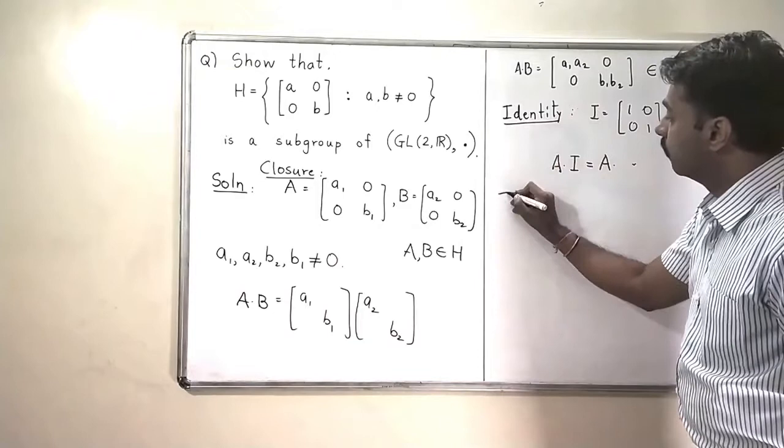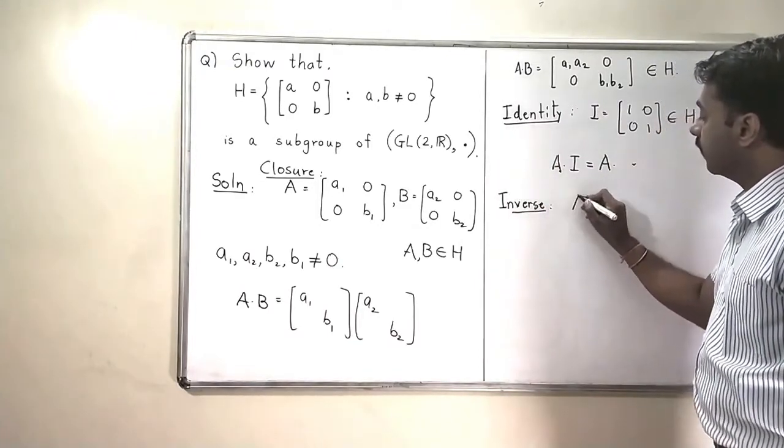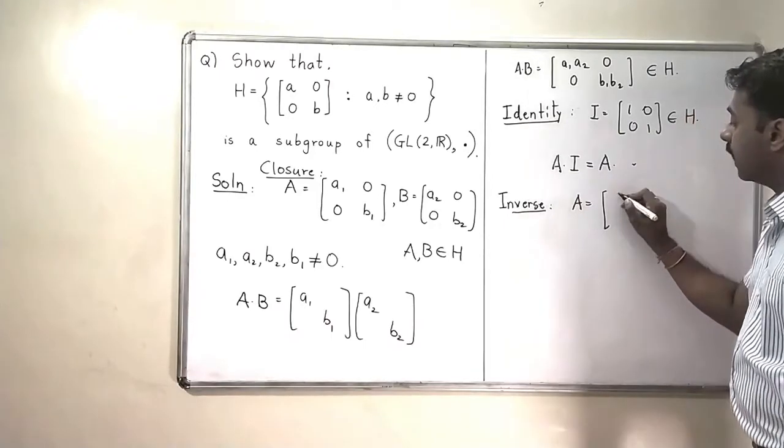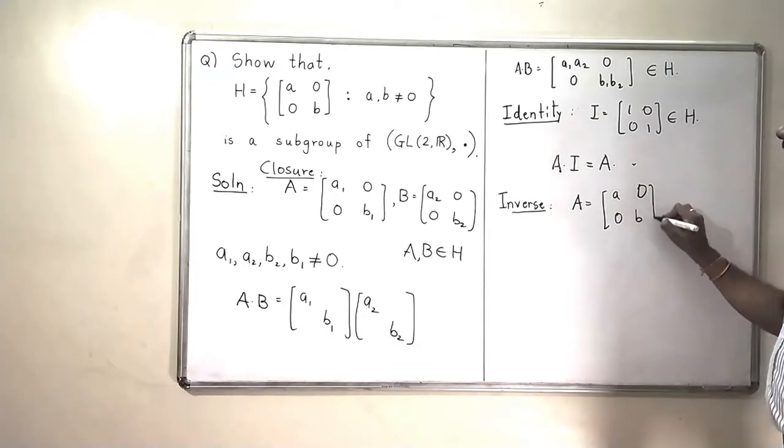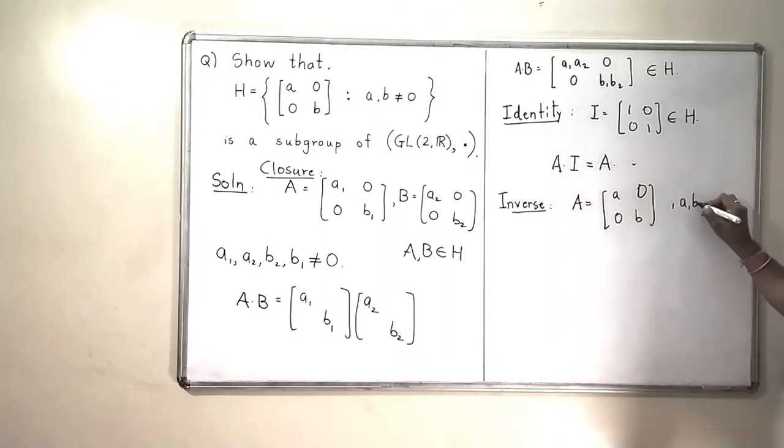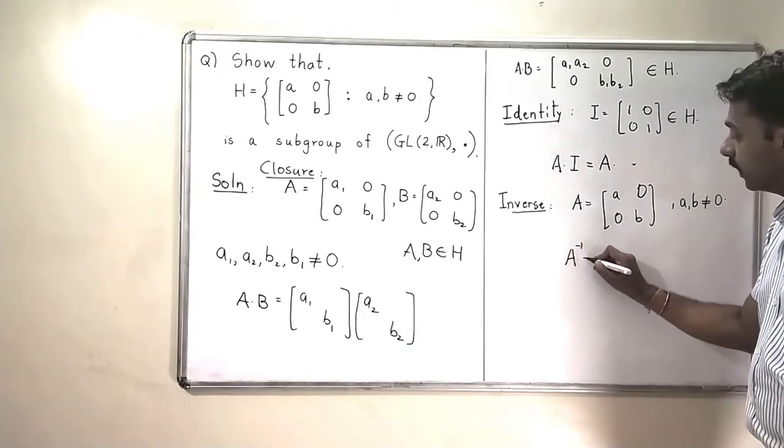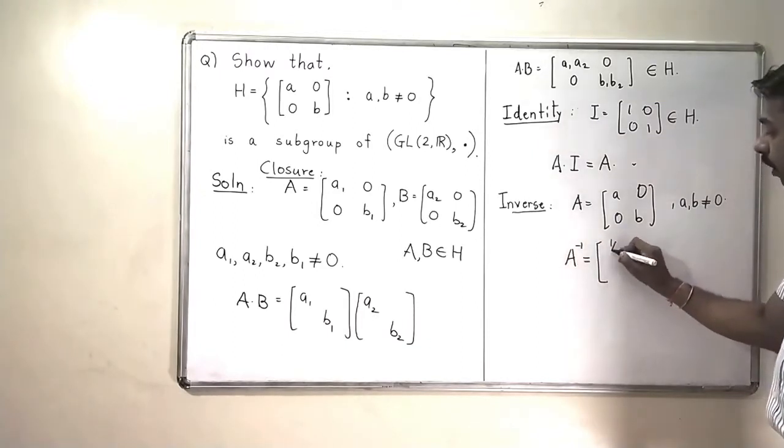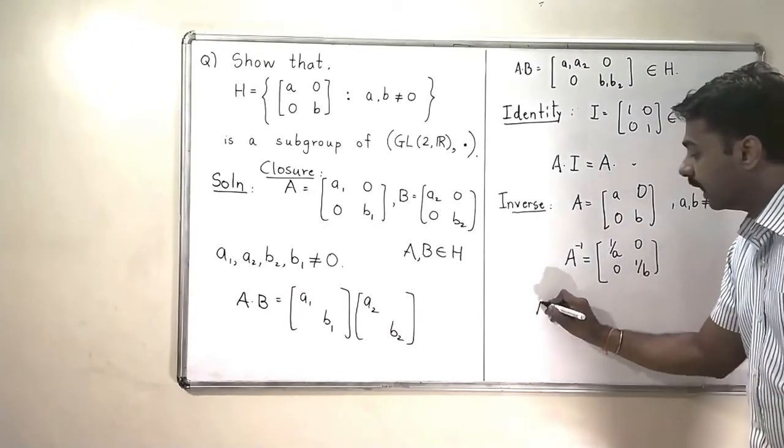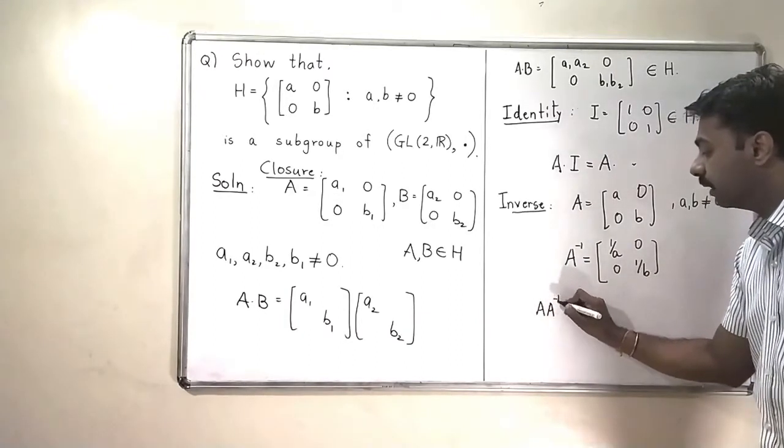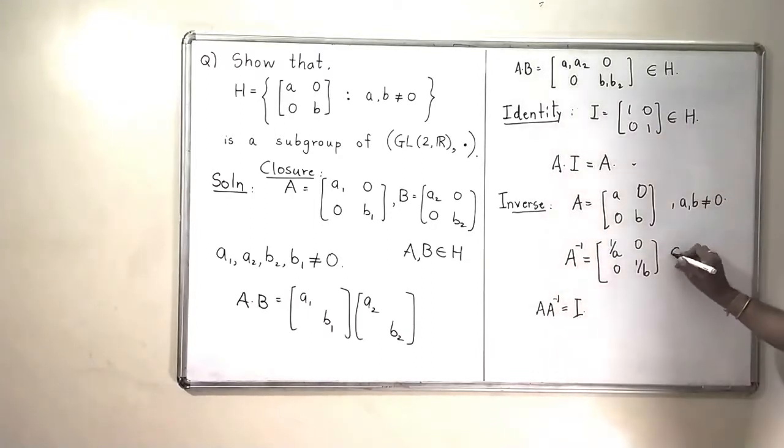The third is the inverse. Now, what is the inverse of a matrix of the form [A, 0; 0, B] where A and B are not equal to 0? Clearly, the inverse of this matrix is [1/A, 0; 0, 1/B] because A times A inverse will be equal to exactly the identity matrix. So, the inverse matrix.